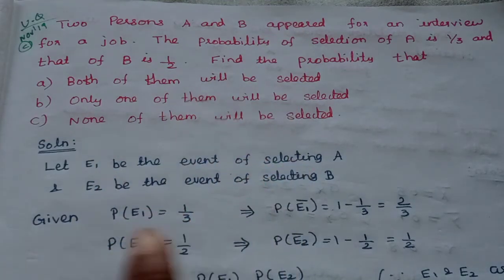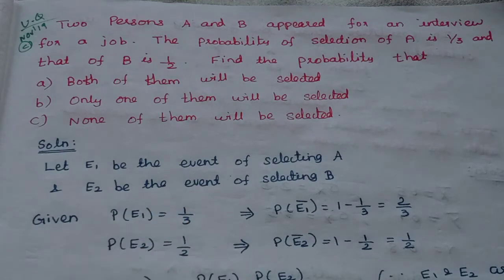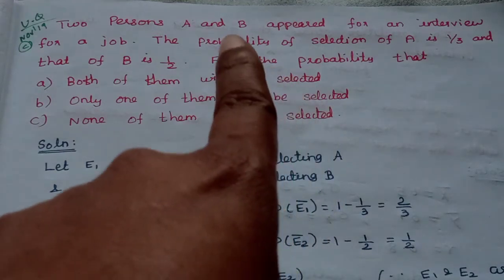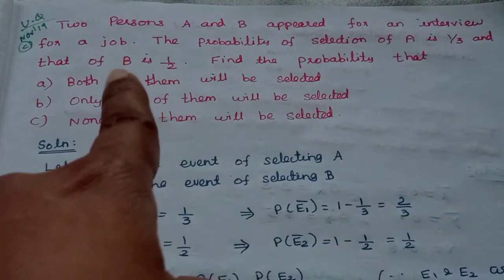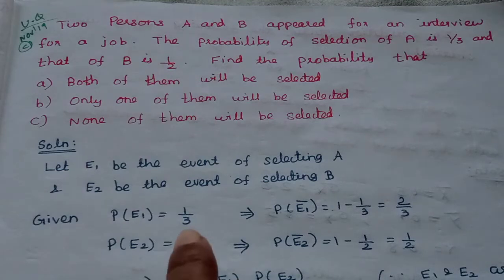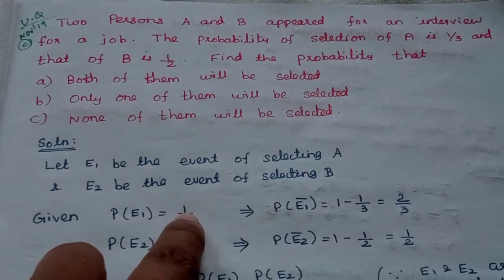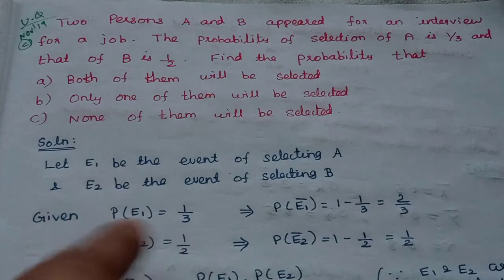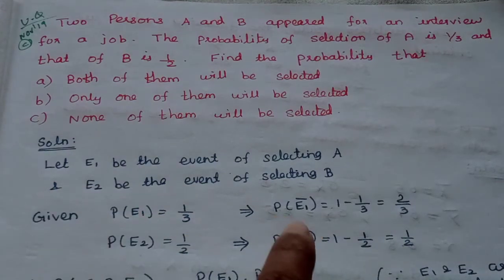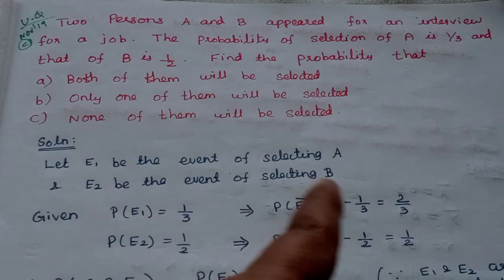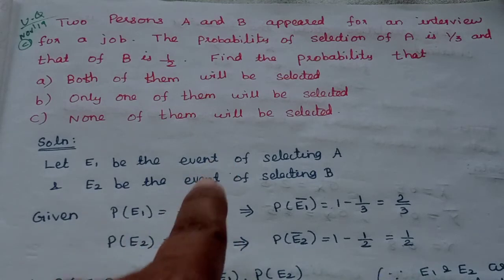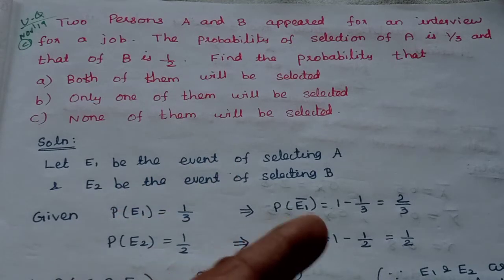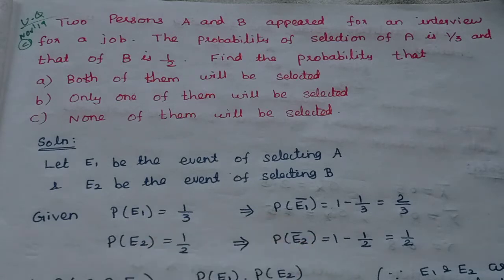Let E1 be the event of selecting A and E2 be the event of selecting B. So the probability of E1 is 1 by 3, and the probability of E2 is 1 by 2. The complement — probability of E1 bar, that is not selecting A — is 1 minus 1 by 3, which equals 2 by 3. Probability of E2 bar is 1 minus 1 by 2, which equals 1 by 2.